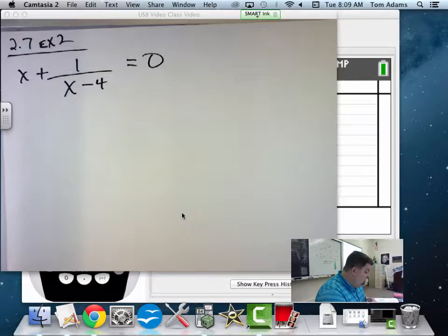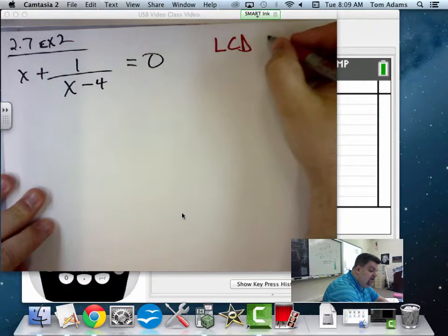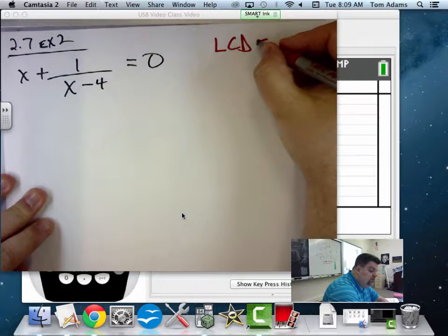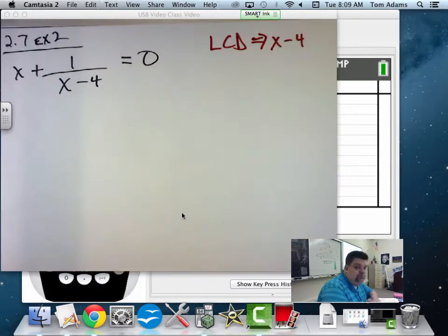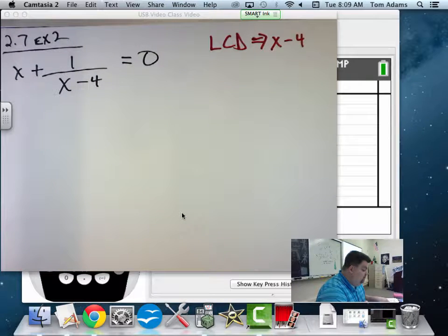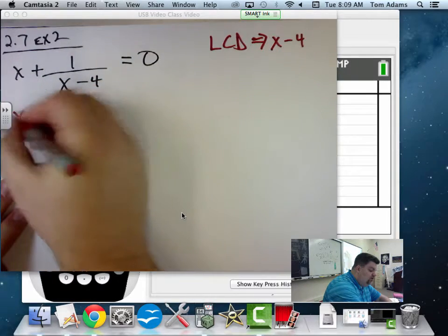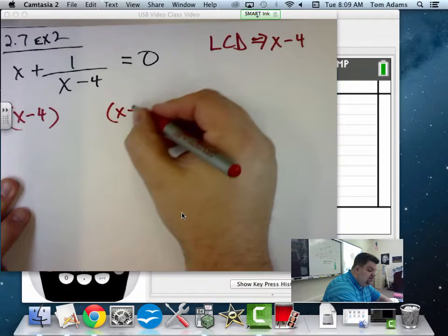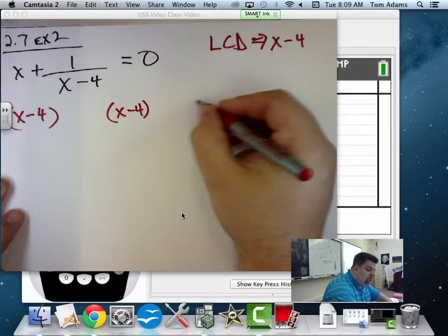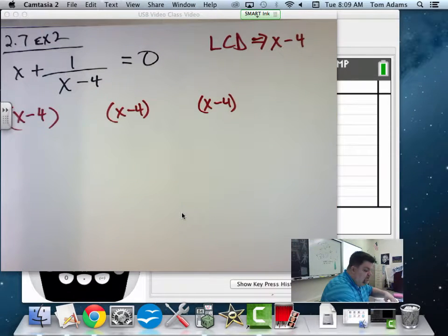Now, this one, our lowest common denominator is x minus 4. So that is what we want to multiply everything by. So on my next line, I'm going to have x minus 4 times something, and then x minus 4 times something.